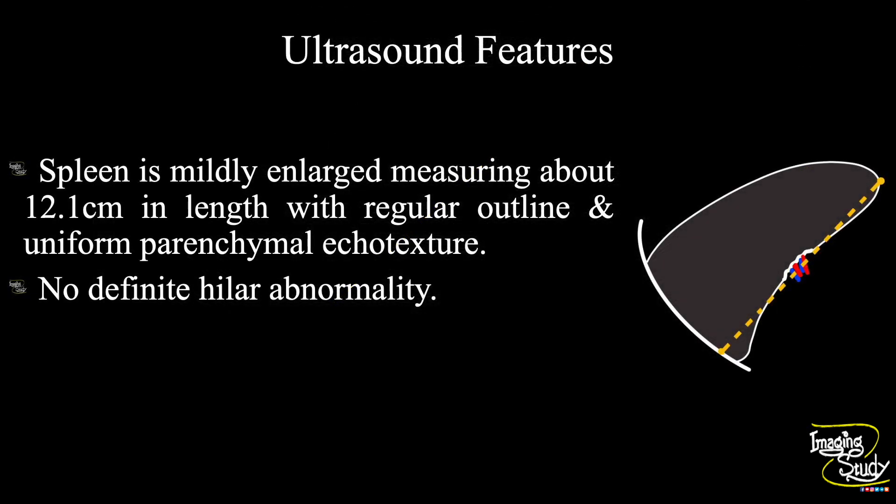So in summary, the spleen is mildly enlarged measuring about 12.1 centimeters in length, with a regular outline and uniform parenchymal echotexture. No definite hilar abnormality is noted. So the diagnosis is mild splenomegaly.